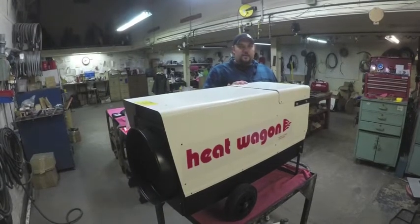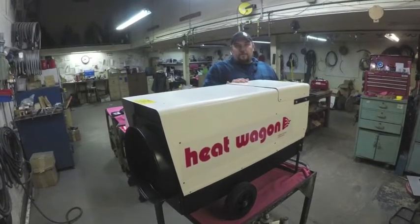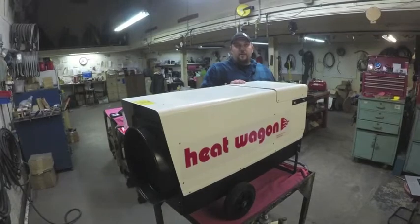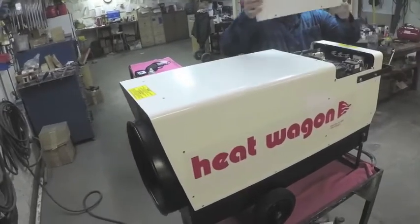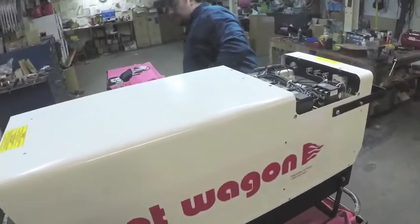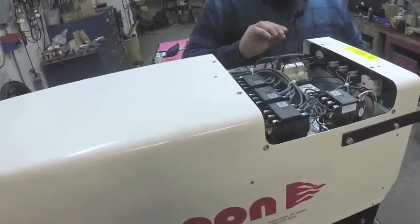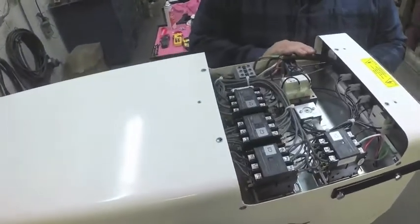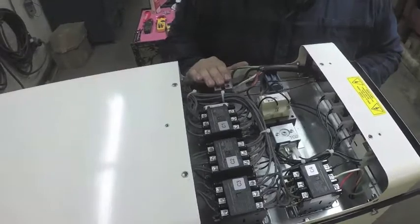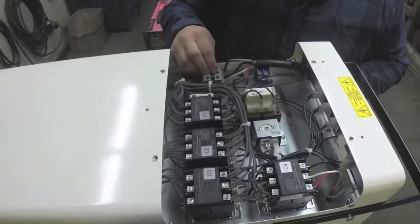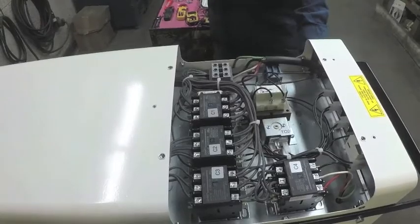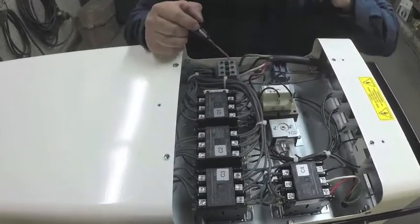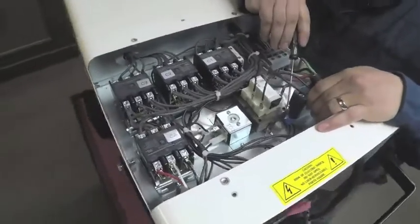We're going to be removing the cover, taking our 480 three-phase and attaching it to the terminal block. Here we can see that we have our 480 running into the input terminal block. The terminal block has hold downs for each individual lead coming in. Your ground will then go to this ground block here.